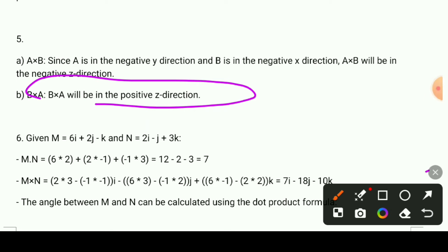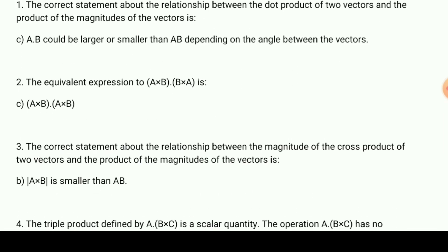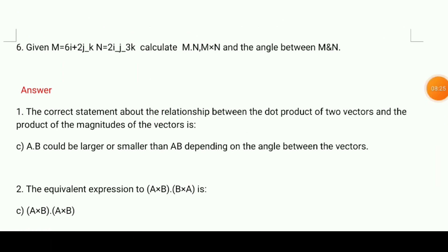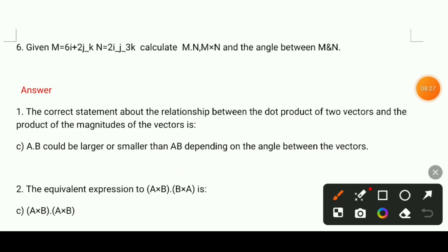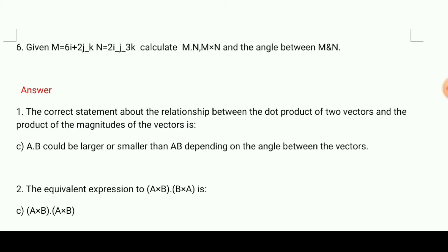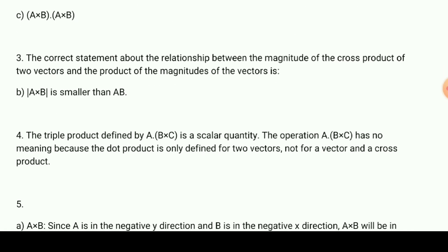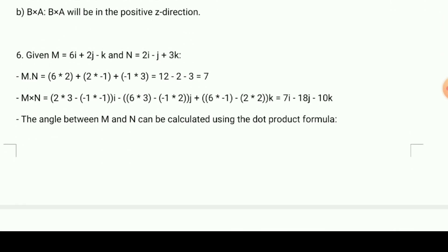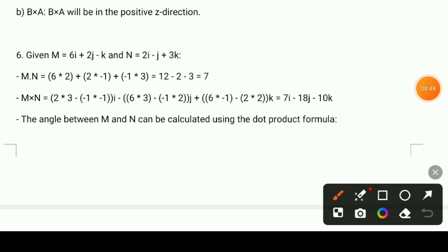Now we have m equal to 6i plus 2j minus k, and n equal to 2i minus 3k. We are asked to compute m×n, the cross product of m and n. This is the cross product calculation.